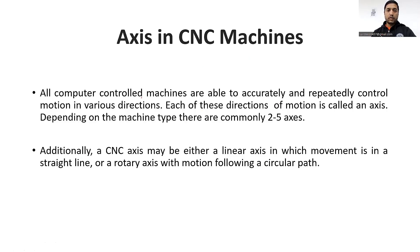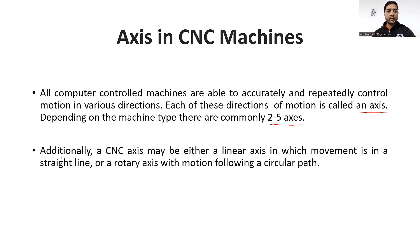All computer controlled machines are able to accurately and repeatedly control motion in various directions. Each of these directions of motion is called an axis. Depending on the machine type, there are commonly two to five axes. But nowadays there are machines available in the market which have more than five axes also. Additionally, a CNC axis may be either a linear axis — in which the movement is in a straight line — or a rotary axis where the motion is in a circular path.